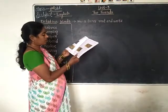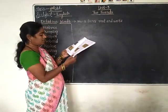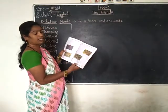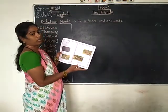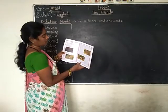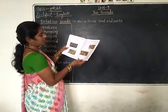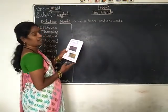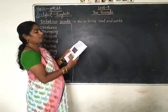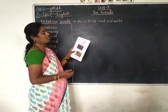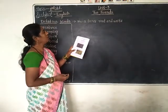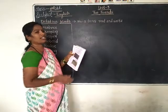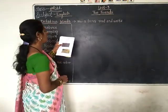Children, now open page number 34. Have you opened it? There is a reader here. I am reading here. Tell me what the answer is. The name of the lesson is what? Two Friends.